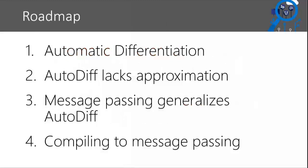The overview of the talk is that I'm going to give an introduction to what automatic differentiation is and how it works. Even if you know what automatic differentiation is, I think you'll find this interesting because I view it in a different way than many other papers explain it. That different view is useful in terms of connecting it to message passing. I'll emphasize what I consider a flaw in automatic differentiation, which is that it lacks a concept of approximation. In order to have a general purpose machine learning language, you really need a concept of approximation native to the language, because many machine learning algorithms use approximation.